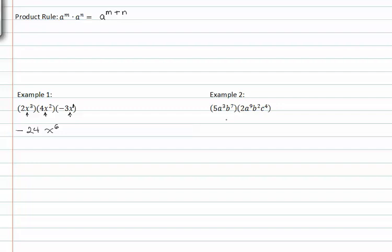Example two is done similarly, only we have more than one base here. So we're going to have to make sure that we match up our bases when we add our exponents. Again, we just multiply the numbers together and get ten.